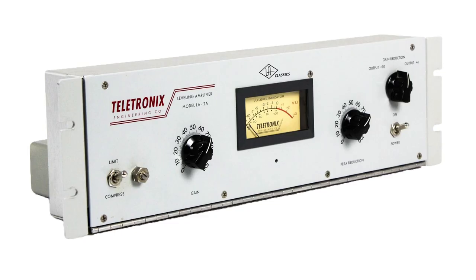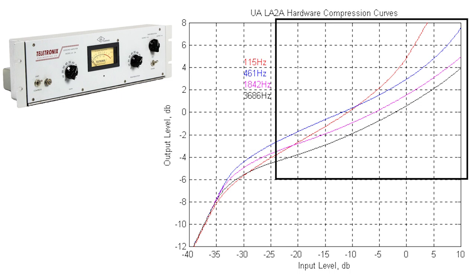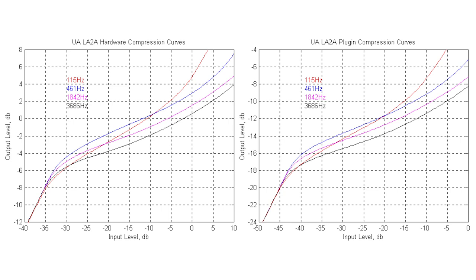Another important nuance of analog compression can be found in the equally iconic Universal Audio LA-2A. This also has a unique program-dependent release, but in addition to that, it exhibits frequency-dependent compression threshold and ratio. Look at this graph and notice that: A, the compression begins earlier for some frequencies and later for others; and B, the compression also intensifies at different rates for each frequency as the signal goes further beyond the threshold. Again, you can see by comparing these two graphs that the developers at Universal Audio created plug-in emulations of the LA-2A that exhibit insanely realistic behavior compared to the original hardware.